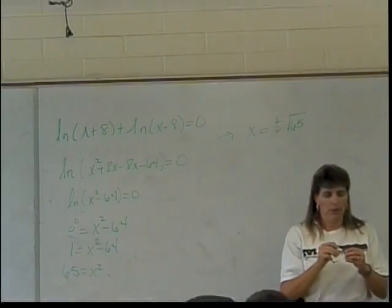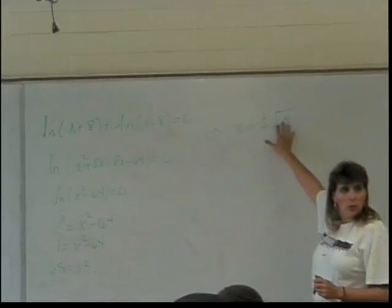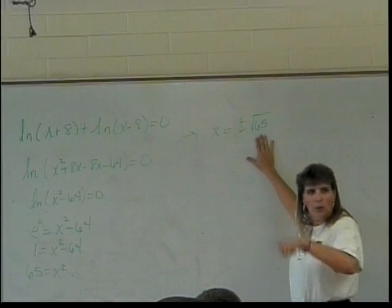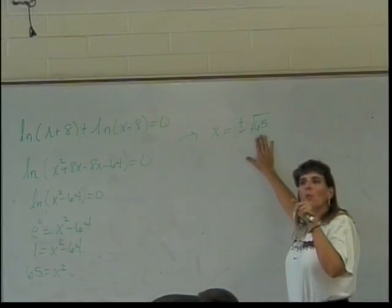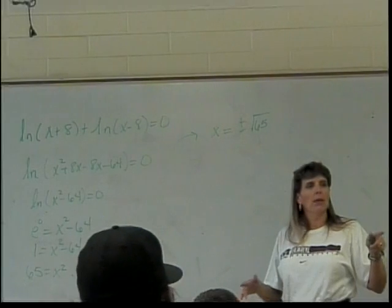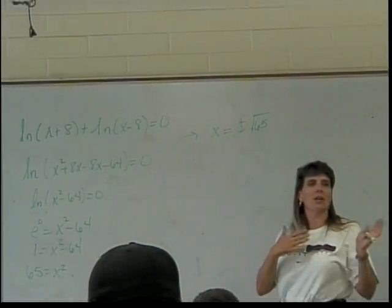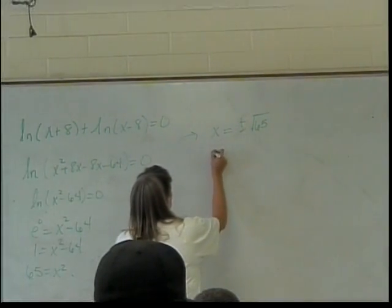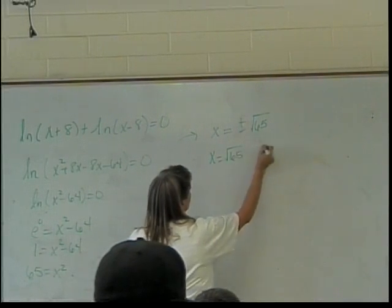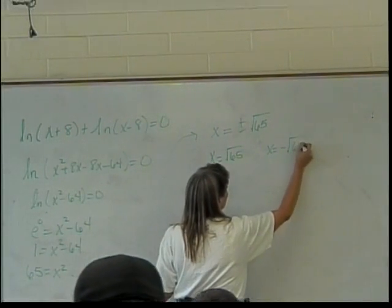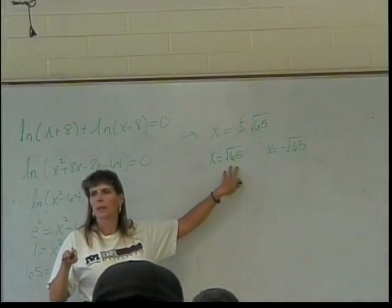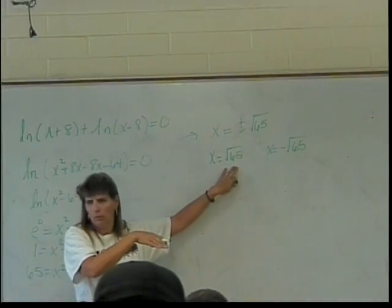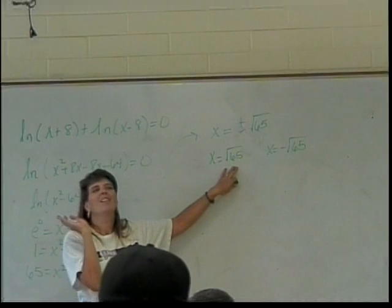Now let me warn you about something. We are going to check these two answers in the original. In this case, it turns out the one that's negative is not a good one. But that doesn't mean the one that's negative is always going to be a problem. Sometimes it's the positive one that causes the problem, so don't just toss out the negative one because, oh well, it's negative, I can't have it. So this is x equals the square root of 65, and the other one is x equals the negative square root of 65. What is the square root of 65 approximately? I mean, really approximately. Eight, but a little bigger, right? Is that approximate enough for everybody? A little bigger than eight.